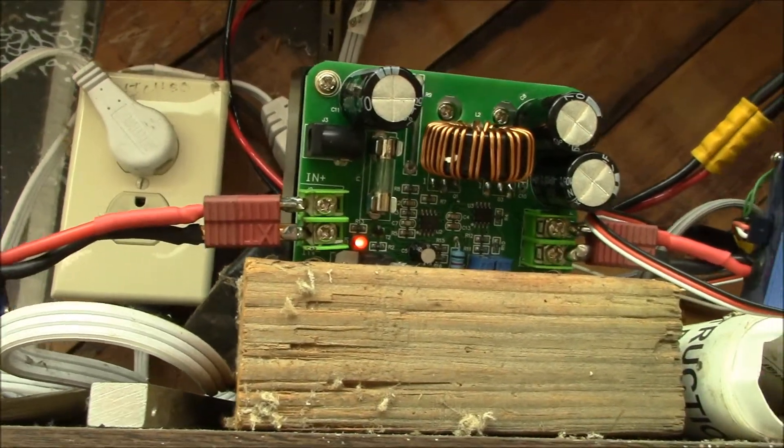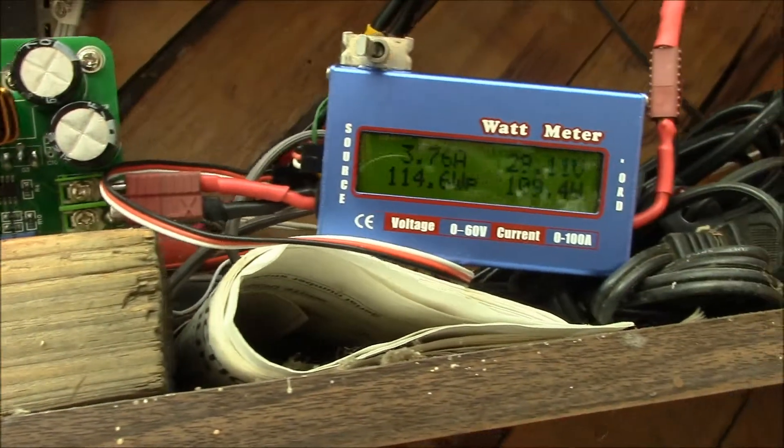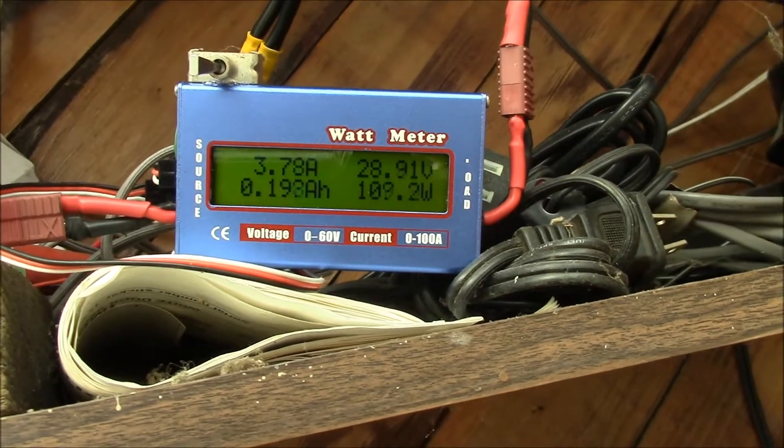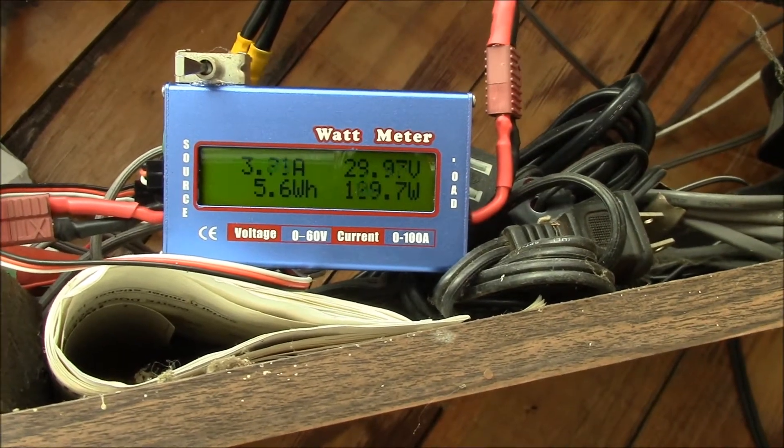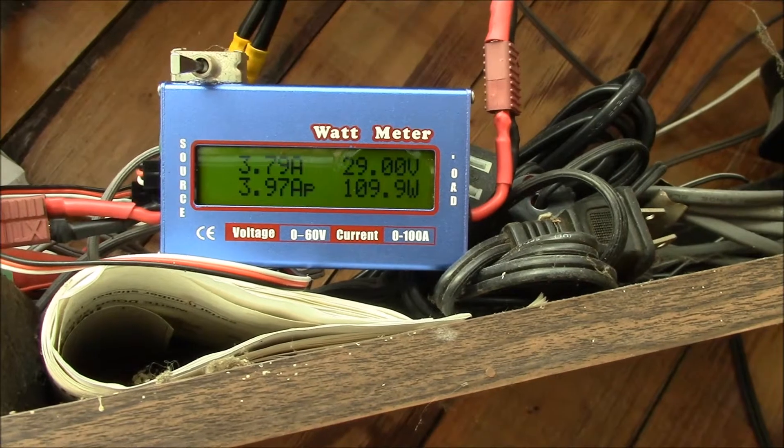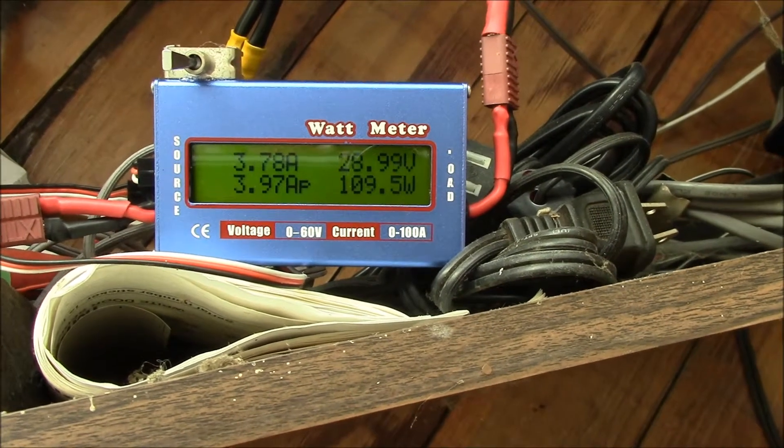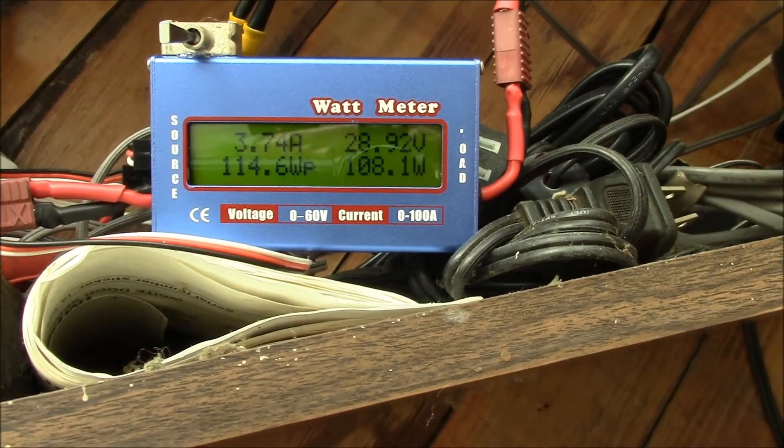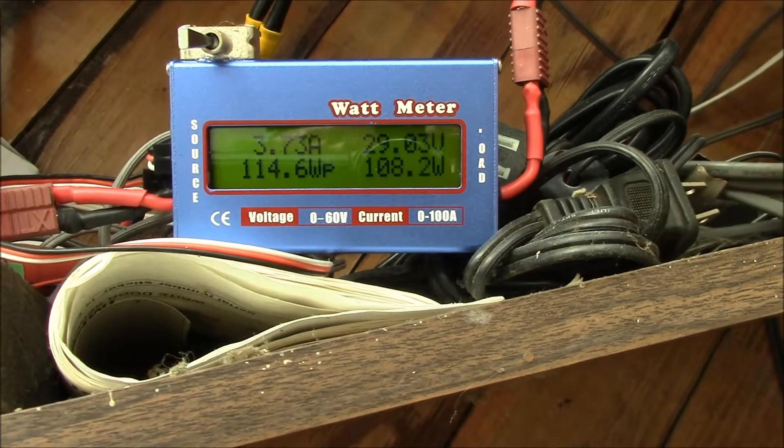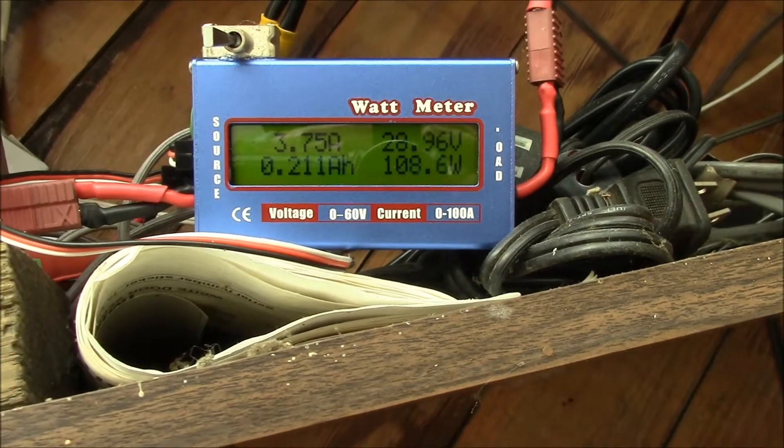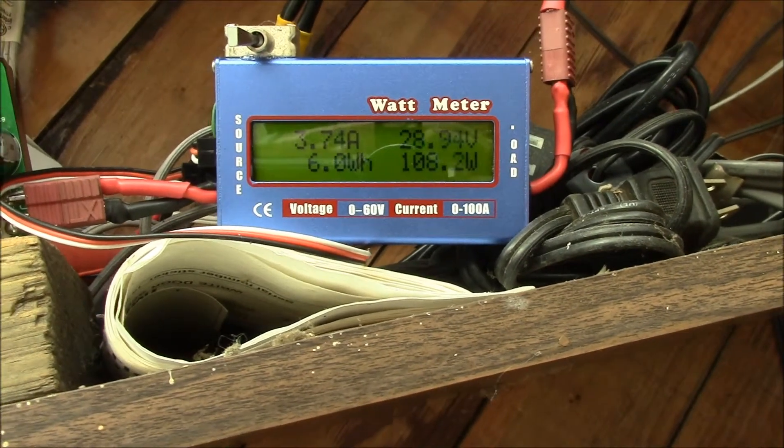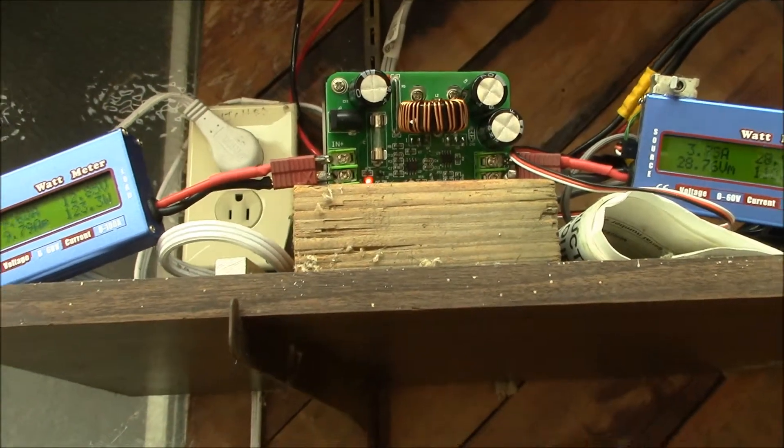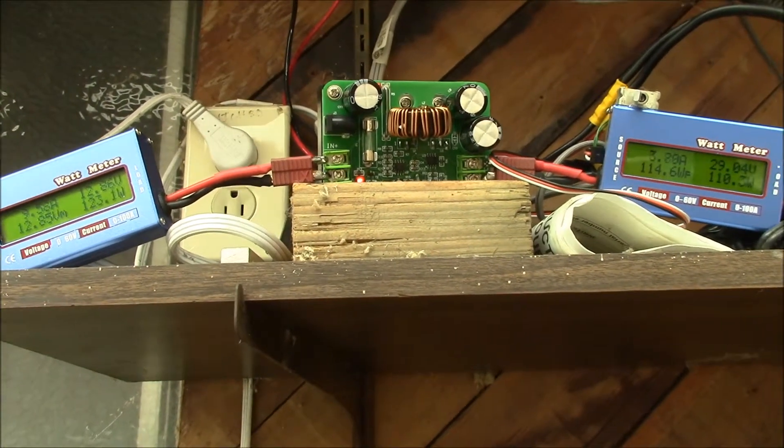Here's my output: about 3.8 amps at 29 volts, about 110 watts. That's right around 90 percent efficiency. I'm losing about 12 watts in the converter. You can see everything right there.